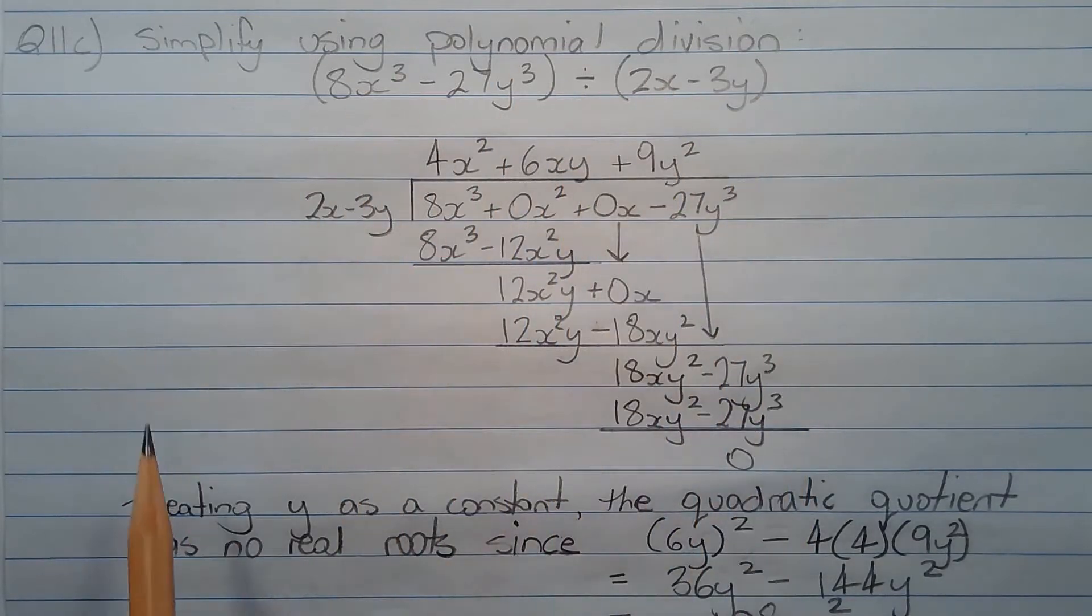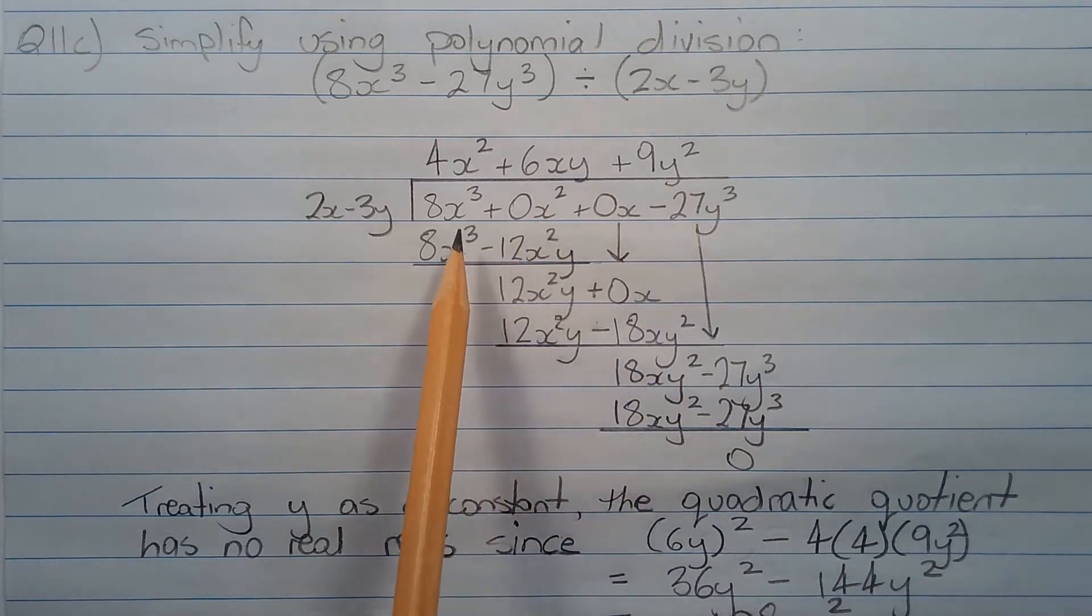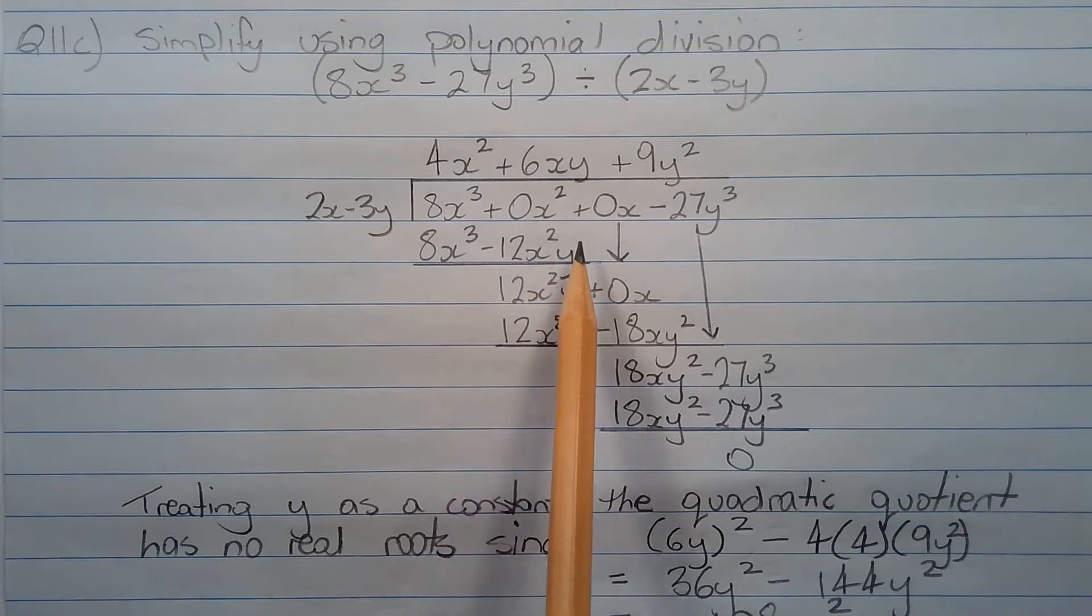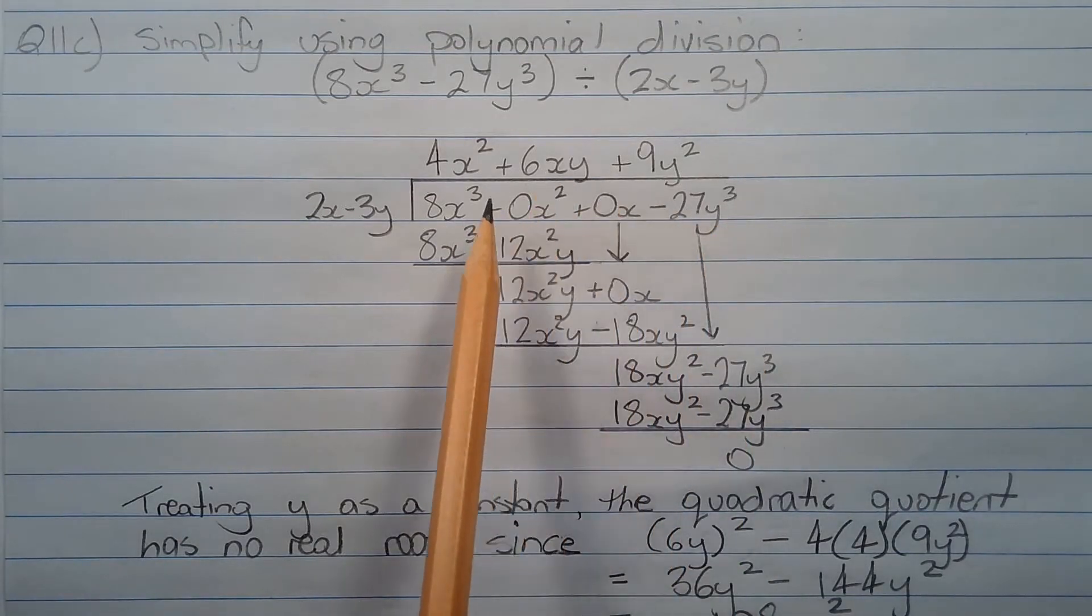Here it is set up for polynomial division. Notice the dividend has two missing terms, the term in x squared and x. So we have 8x cubed plus 0x squared plus 0x minus 27y cubed. It is important to replace these missing terms to make the polynomial division process easier.